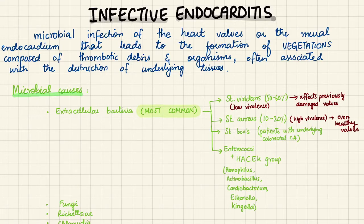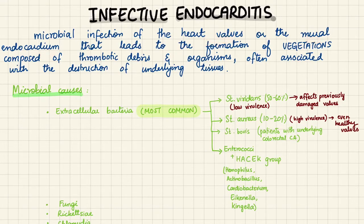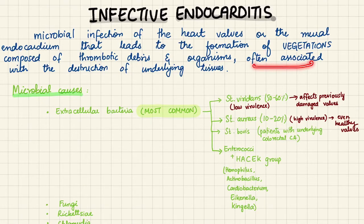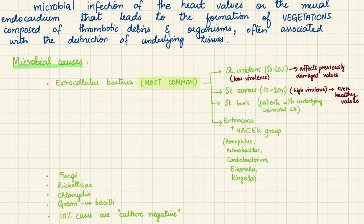This definition is taken from Robin's Pathology. It is an infective process — any microbe can cause it. It is the infection of heart valves or the endocardium, forming vegetations on the valves or endocardium composed of thrombotic debris and organisms, often associated with destruction of the tissue underneath the vegetation.